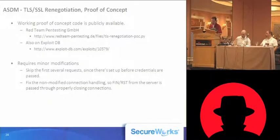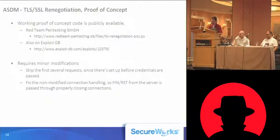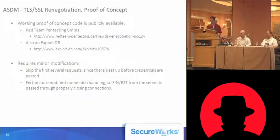There is proof-of-concept code for the TLS SSL renegotiation vulnerability, released by a group called RedTeam Pentesting out of Germany. It's available on their site as well as on Exploit-DB. It does require some modifications to work with ASDM. We would need to skip the first several requests since the initial setup and file downloads don't include the authentication credentials we're after. I also noticed the connection handling in this proof-of-concept script was a little strange in my testing — when the server would send a FIN or reset packet, that wasn't being passed through to the client, so the client would just sit and wait forever. That's not a problem with a single connection, but with ASDM firing off connections rapidly, that could be a big problem.